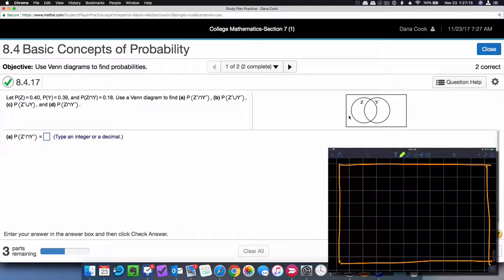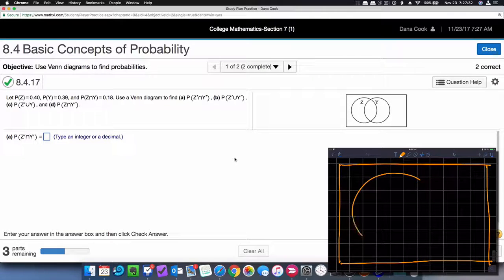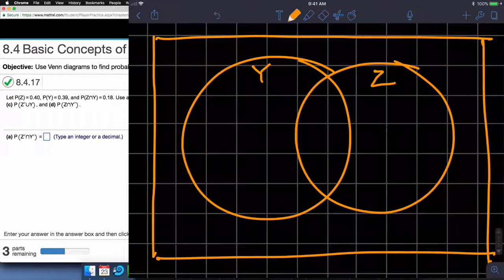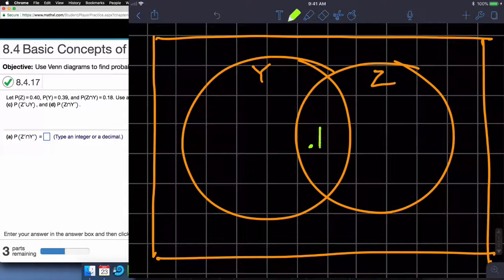So we're going to build the Venn diagrams so that we can answer this question. First, let's turn our attention to the general or overall Venn diagram. So that's Y and that's Z, and they tell us that this inner portion, the intersection between the two, is 0.18.